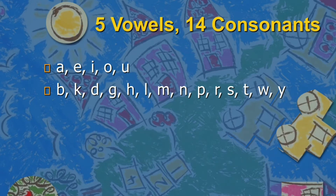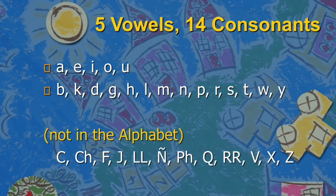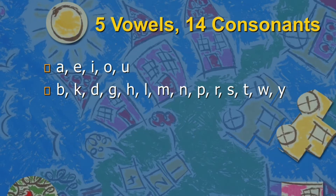Our 5 vowels are A, E, I, O, and U. And the consonants are B, K, D, G, H, L, M, N, P, R, S, T, W, NG, and Y.